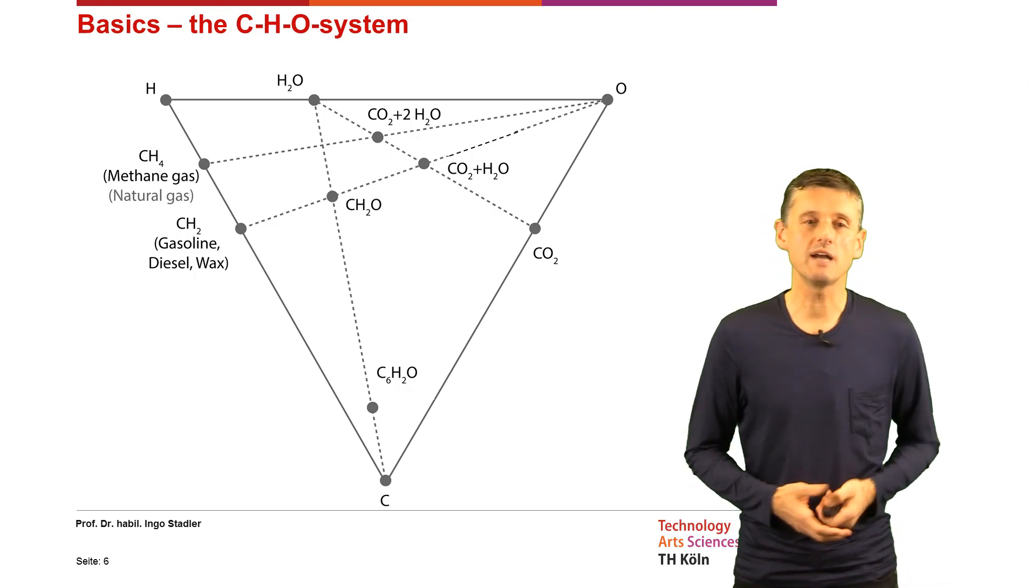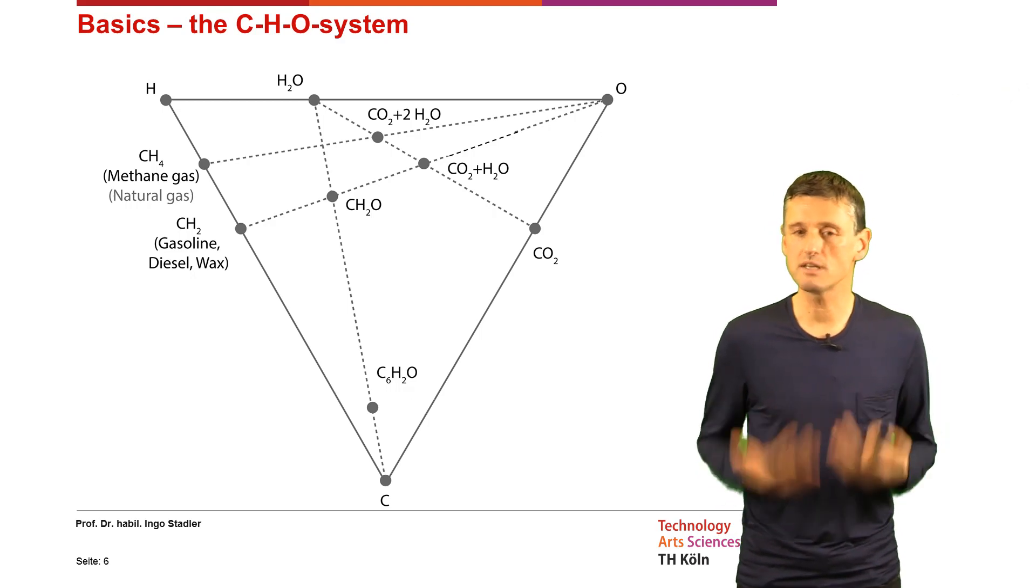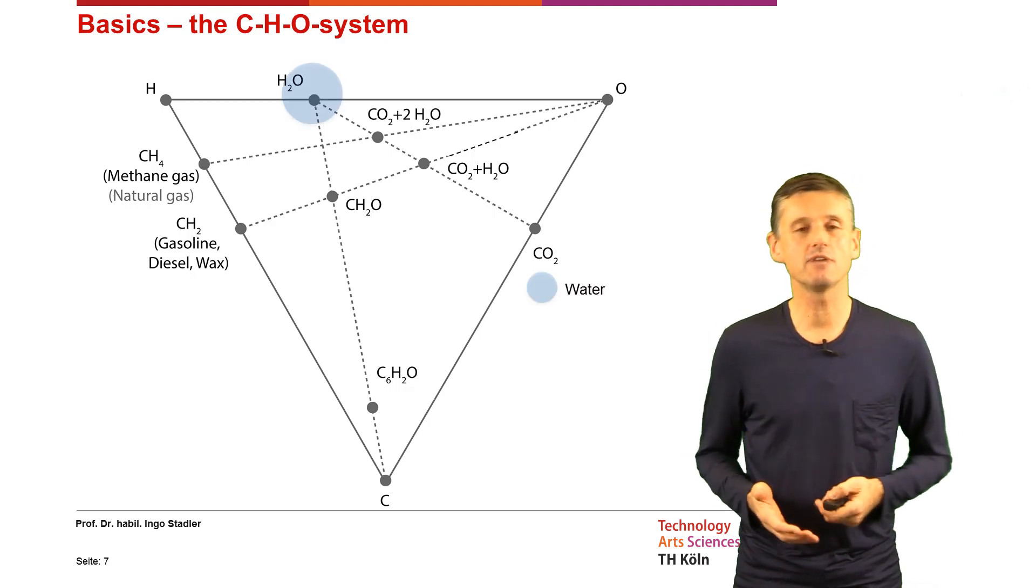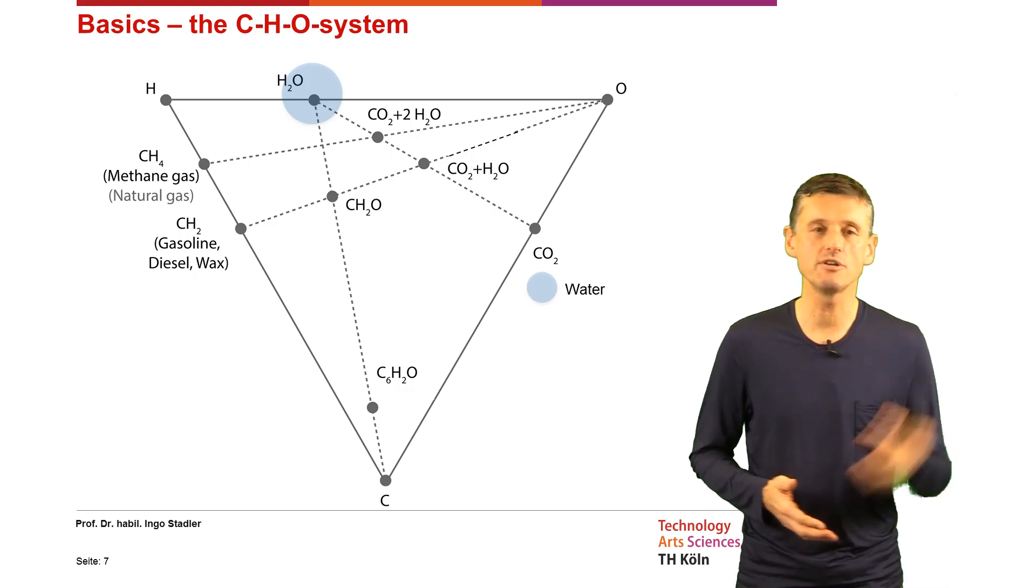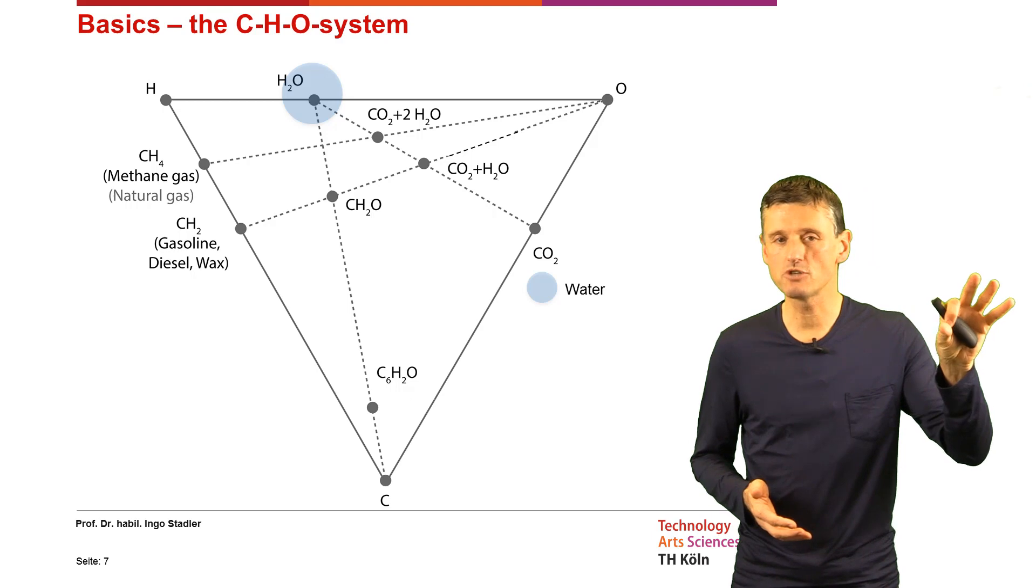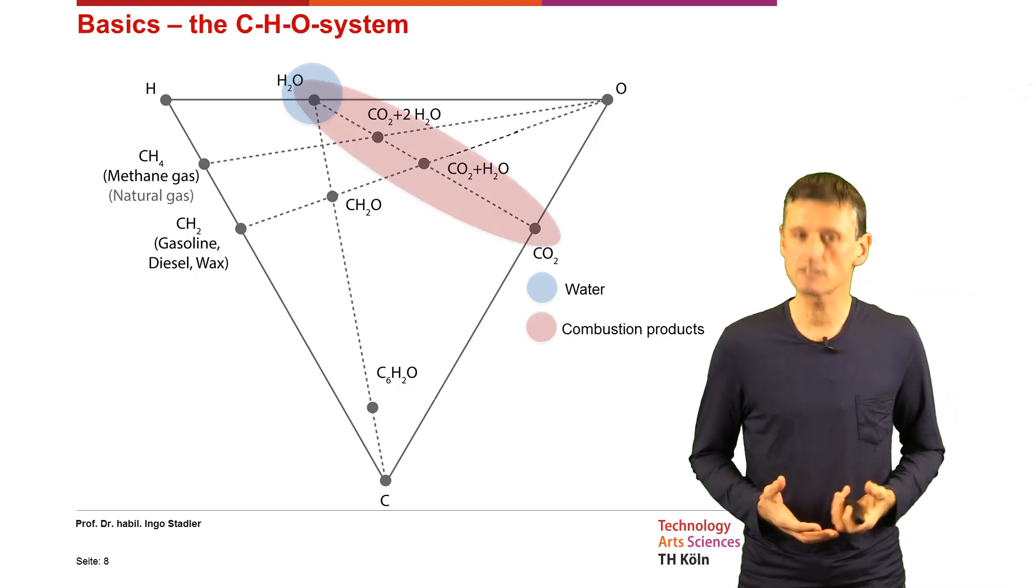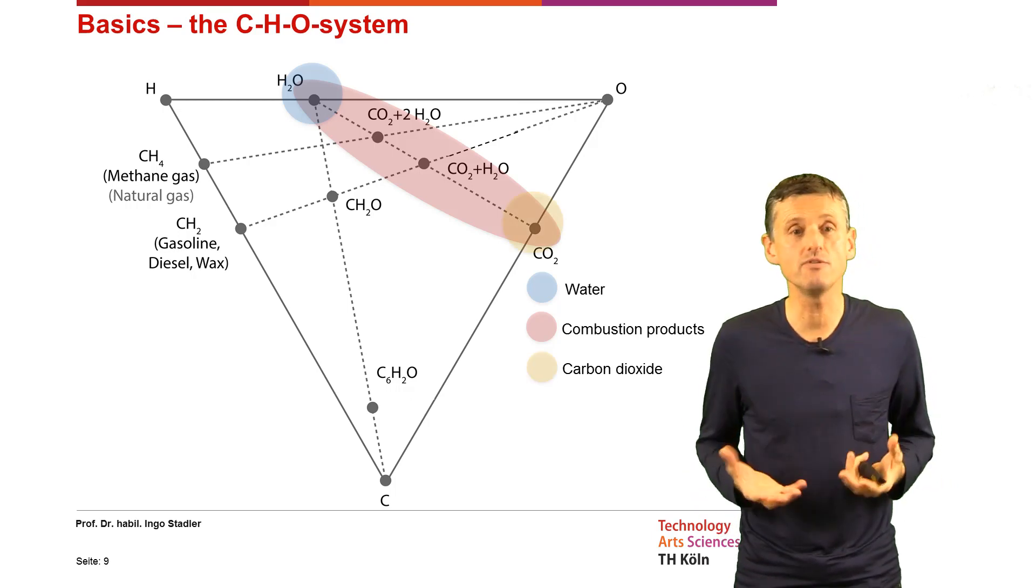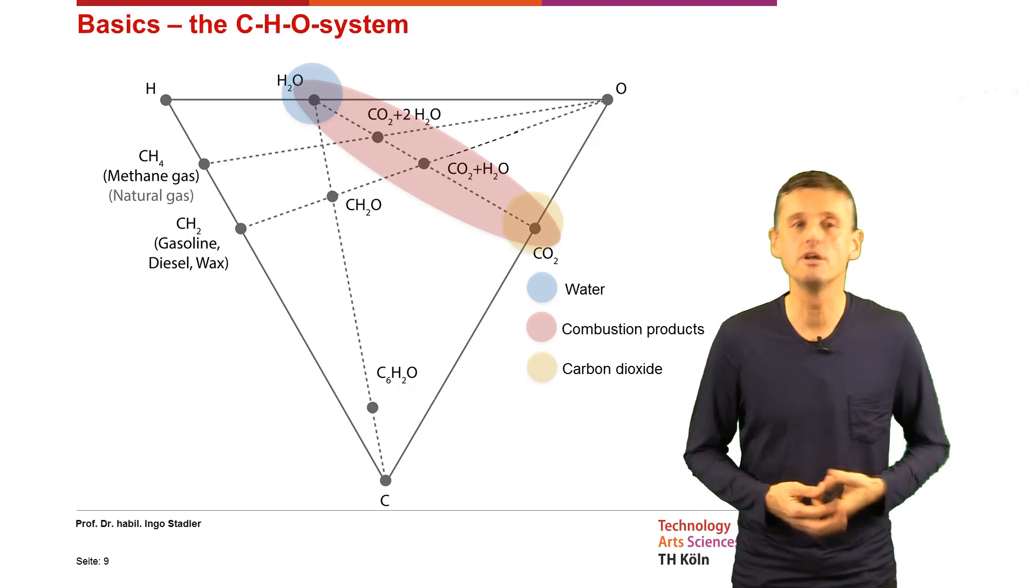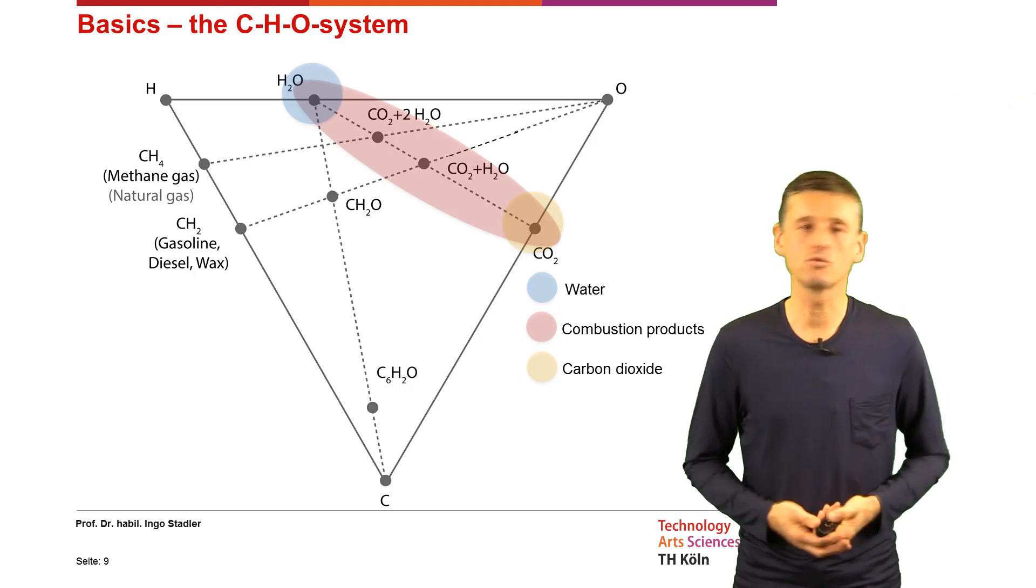So starting with what we get when we are combusting the fossil energy sources, then we get all the products that we find here on this line reaching from water, H2O, to CO2, the carbon dioxide and all the products in between. That's what we get when we combust, when we burn fuels like gas, like oil, like coal products.